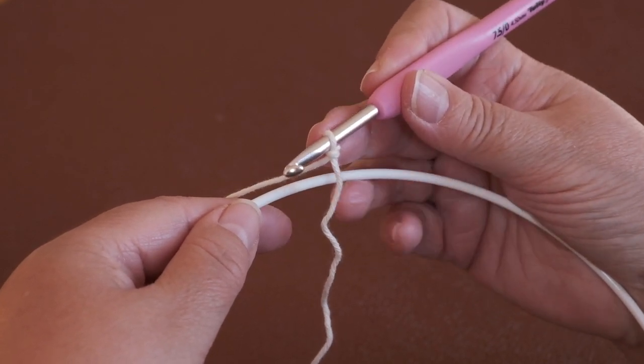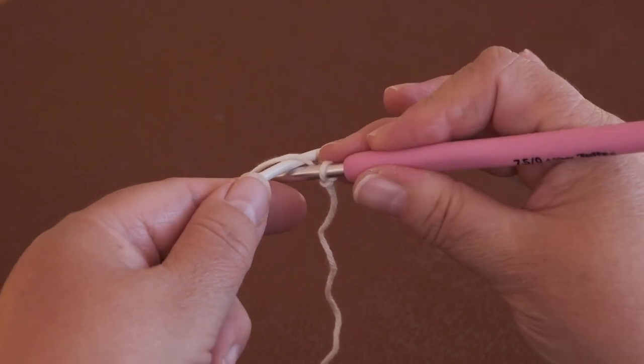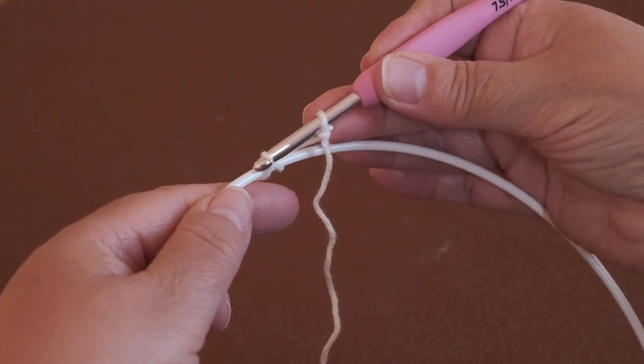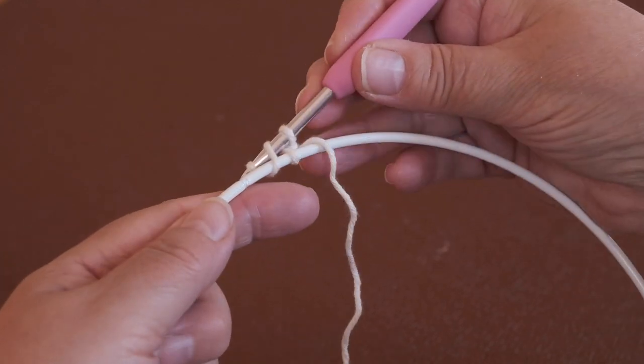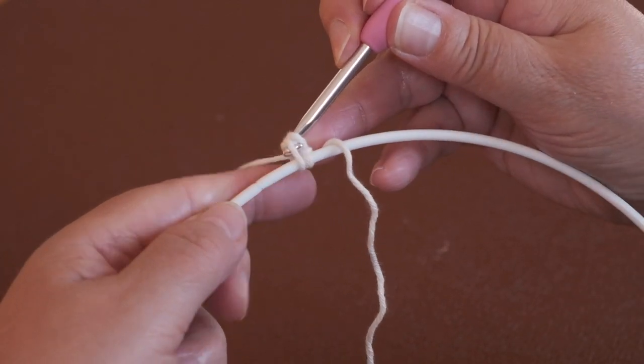You need a loop on your hook, go underneath the ring, pull a thread through, wrap around again over the top and pull through the two loops.